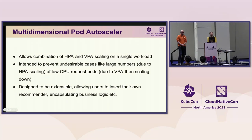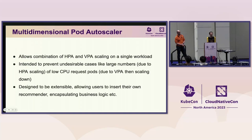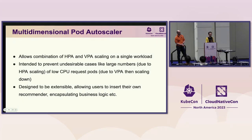Multi-dimensional Pod Autoscaler allows the combination of HPA and VPA scaling on a single workload. Historically it was recommended against running HPA and VPA on the same resource metrics, as that could result in odd edge cases — for example, many very small replicas because VPA would scale resource requests as CPU started falling. It's also designed from the ground up to be extensible, allowing users to insert their own recommender if they want to encapsulate business logic, such as a private pricing plan.